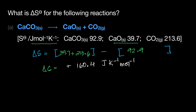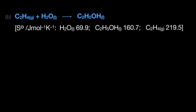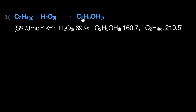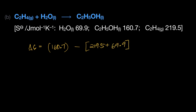One last example: ethene and water becoming ethanol. Gas and liquid becoming liquid — we can predict a decrease. Calculating: ethanol is 160.97, minus the reactants — ethene at 219.5 and water at 69.9. The data will be given to you. Doing the math gives delta S of minus 128.7 joules per Kelvin per mole. That's how you calculate entropy changes for a reaction.